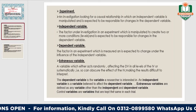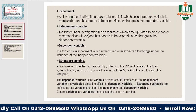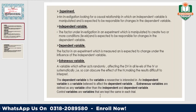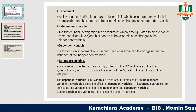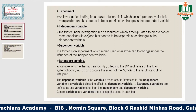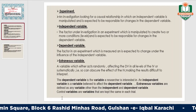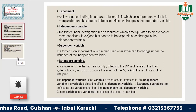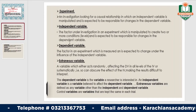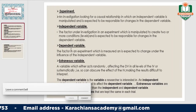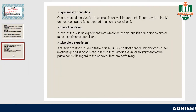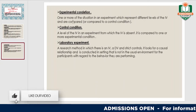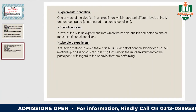The dependent variable is the variable a researcher is interested in. The independent variable is a variable believed to affect the dependent variable. Extraneous variables are defined as any variable other than the independent and dependent variable. Control variables are variables that are kept the same in each trial — they ensure no changes come to what we have applied and controlled.